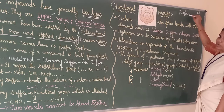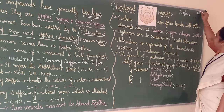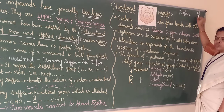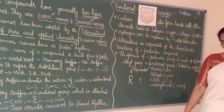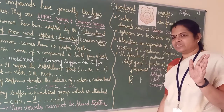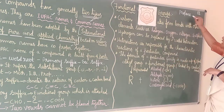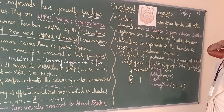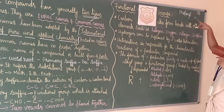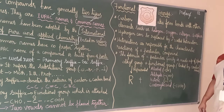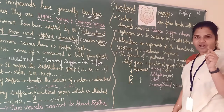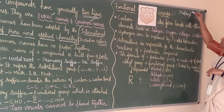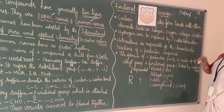In IUPAC, two vowels cannot be placed together. So E and O can't come together — we should strike the final E and add the suffix. So propane becomes propanol, spelled P-R-O-P-A-N-O-L. Same thing for all: methane, ethane, propane, butane — all ending with E, so when adding -ol, strike the last E and add -nol.